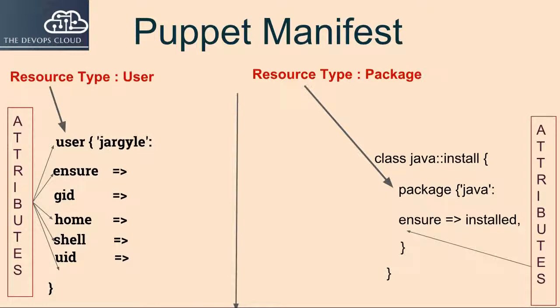Let's take an example of user and package resources. The resource types will be user and package, and we will have different attributes for each. For the user resource we will have attributes like user, ensure, gid, password, home, shell, and uid. For the package resource, the name itself will be the package name, and ensure will be the attribute for the package resource.